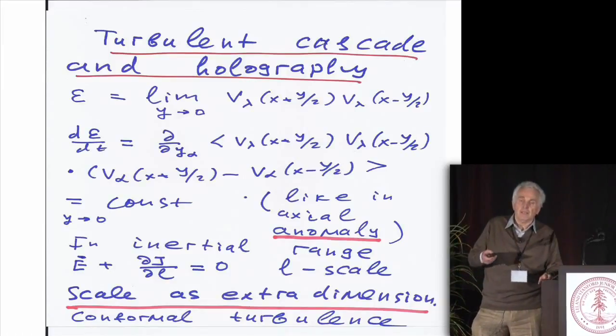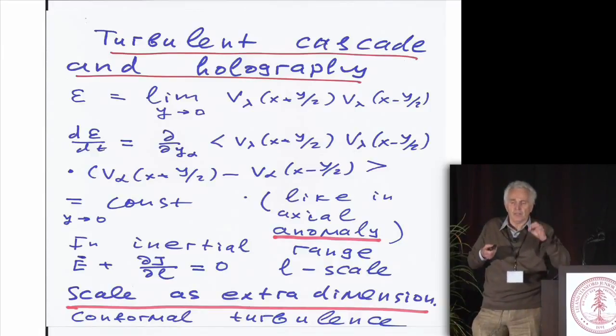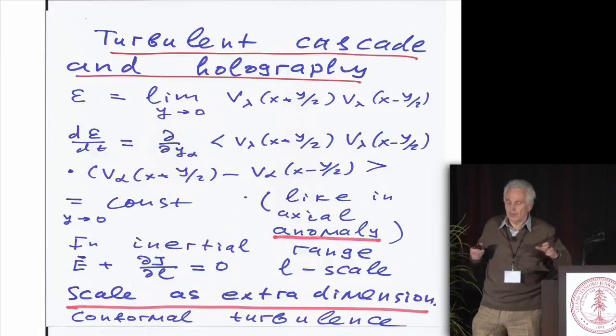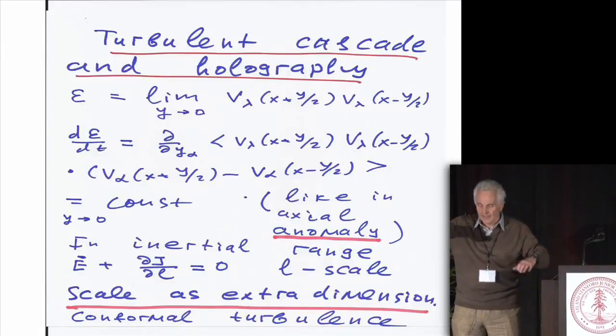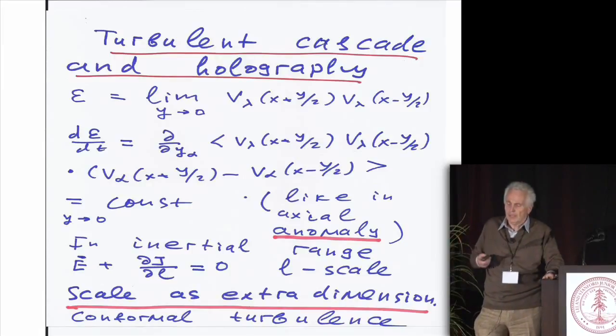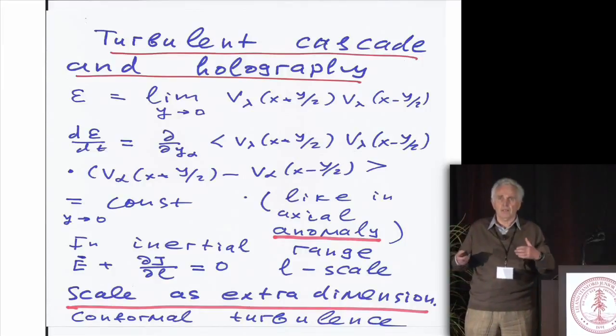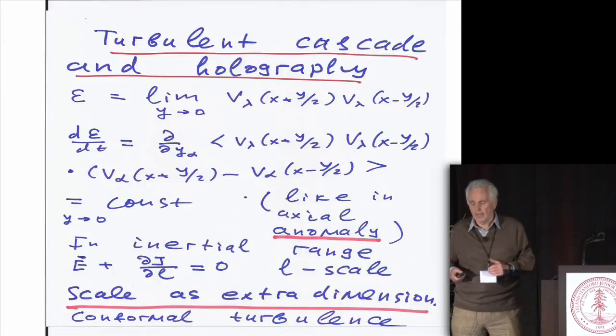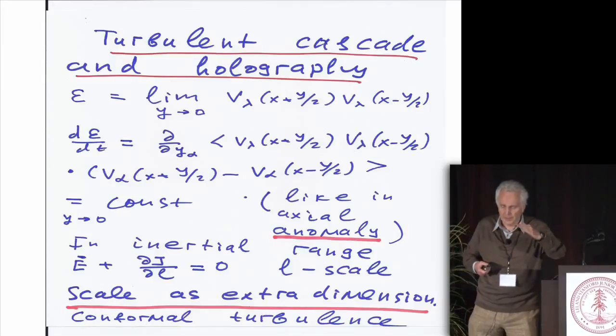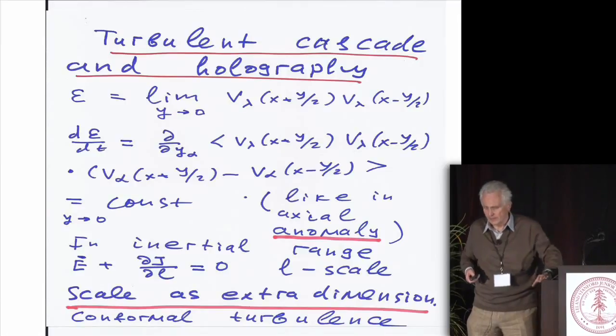Namely, if you tend viscosity to zero first, you get one result. If you first do physics and then, after that, you turn viscosity to zero, you get another result. And that's precisely precise analog of how axial anomaly arises when we introduce the cutoff, the ultraviolet cutoff. Viscosity in turbulence is the ultraviolet cutoff. There are two scales also and so on.